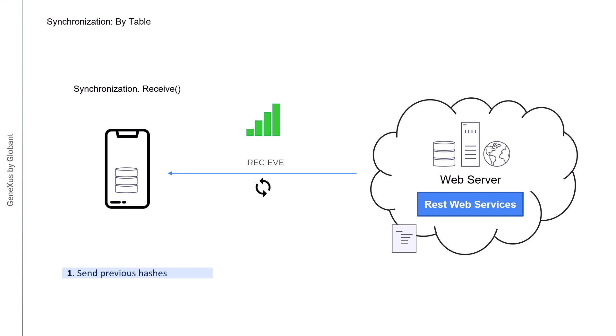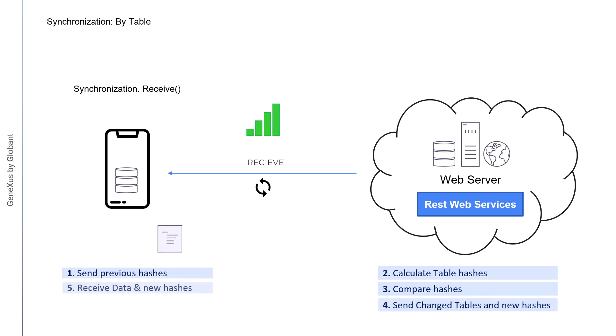Next, for each table, the server calculates a new hash with the current data. It also compares the hashes with the ones it currently has, and then sends data from the tables when it determines that they were modified. If the table wasn't changed since the last synchronization, no action is performed. The device receives the data with the new hashes. Finally, the device replaces the tables that were modified — it deletes the content and generates it again with the new information. All communication is done using REST services.